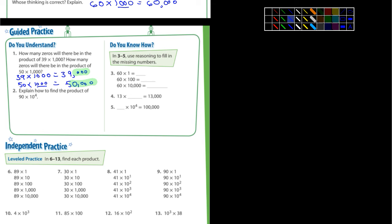Number two says explain how to find the product of 90 times 10 to the fourth. Miss Uguisa, first off before we do anything, look at this up here. You're going to see 10 to the fourth, 10 to the third, 10 squared. You should know what those are.